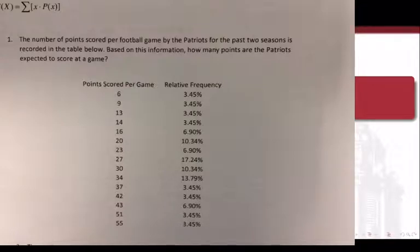Number of points scored per game, which in principle is a random variable, right? For any upcoming game, we don't know how many points the Patriots will score. So we're going to think of this as being like our X, number of points that they score per game. And you're also given the relative frequency. What percentage of games that the Patriots played in the last two years did they score that number of points?